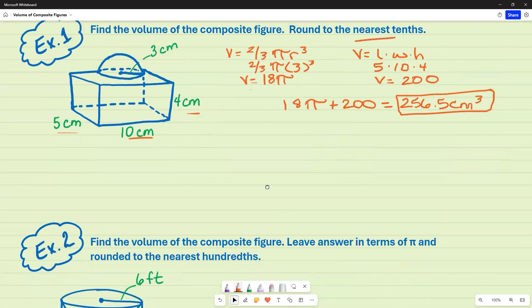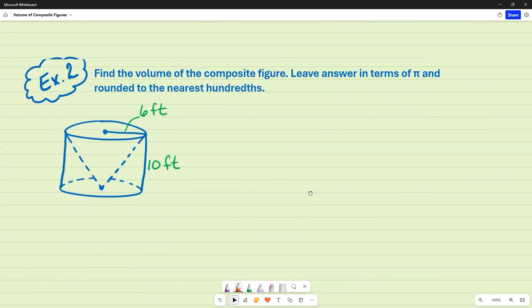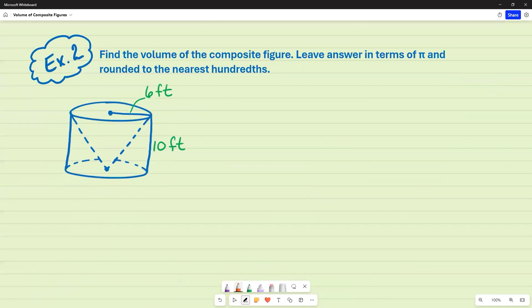But this time, since one is inside of the other, instead of adding, I am going to actually subtract. So you want to start with the outside figure, which in this case is going to be the cylinder. So for my cylinder, the volume is going to be V equals pi r squared times the height, where r is 6. So we're going to raise 6 to the second power. And then our height is 10.